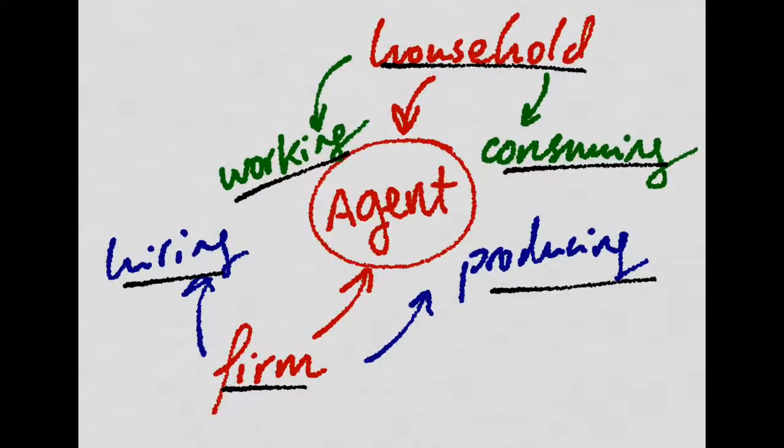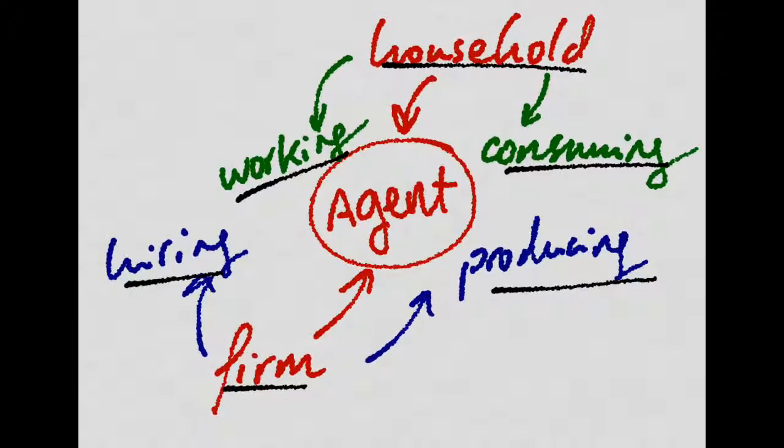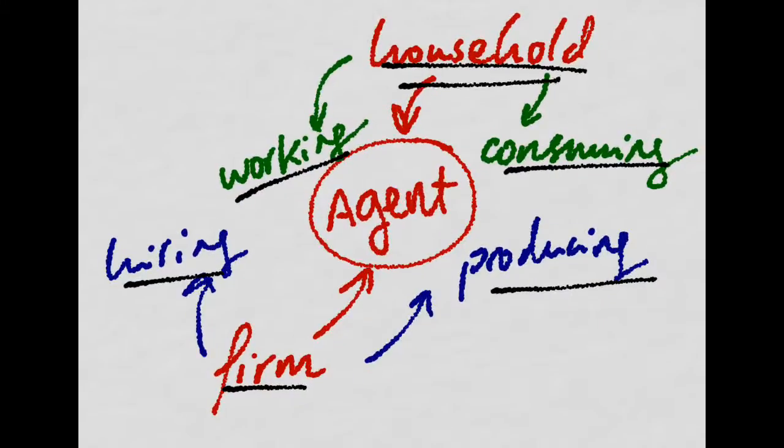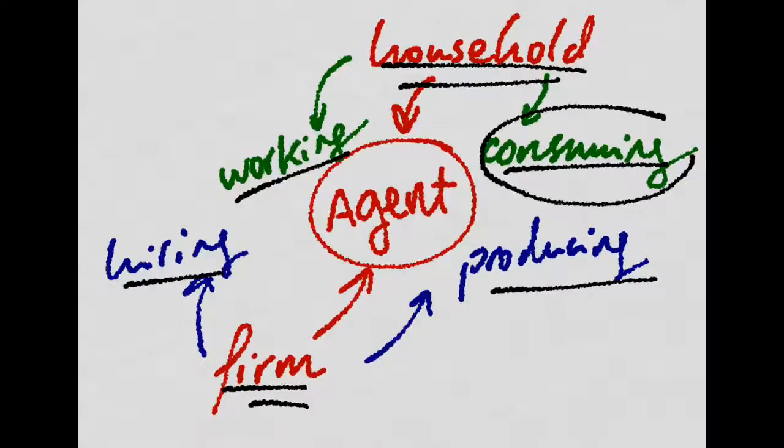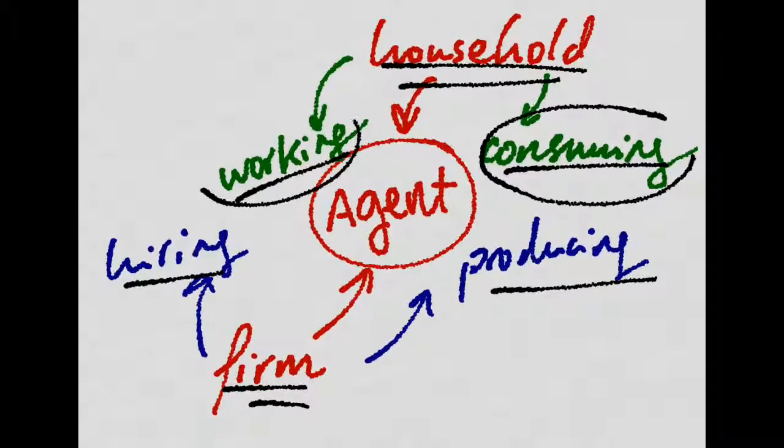Let's suppose there is only one agent, which is both a household and a firm, consuming and producing, and using his work as an input.